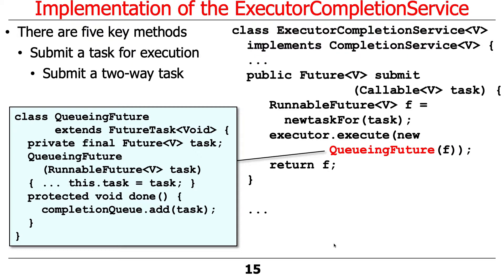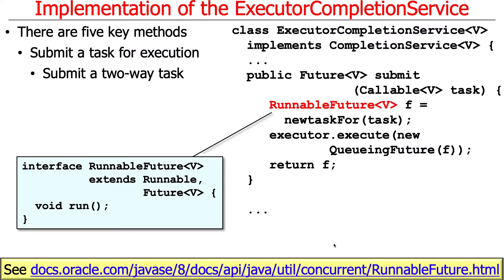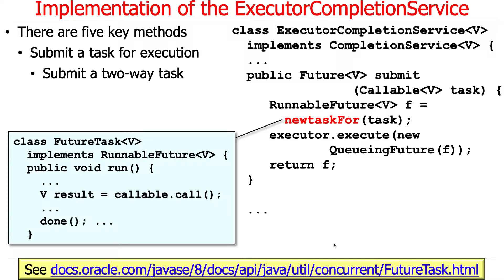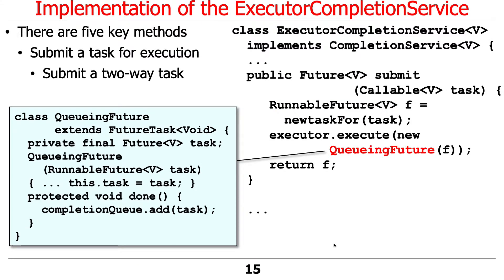QueueingFuture is a FutureTask, so it takes a parameter and stashes it away internally to do the actual work. The only thing QueueingFuture really adds is a done method, and that done method adds the finished result to the completion queue. That gets called when the run method calls call, gets a result, and then calls the done hook.